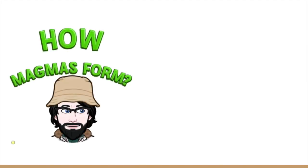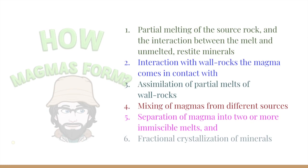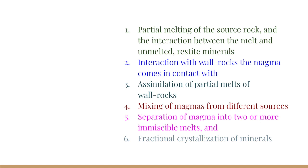We shall now look into some of the general processes that result in magma development. Formation of any magmatic rock or magmatic ore deposit is the result of a complex set of petrological processes, starting from the site of melt formation, during melt transportation through the mantle or crust, and to the site of final crystallization. The processes that control magma compositions include partial melting of the source rock, interaction between the melt and unmelted restite minerals, and interaction with wall rocks the magma comes in contact with.